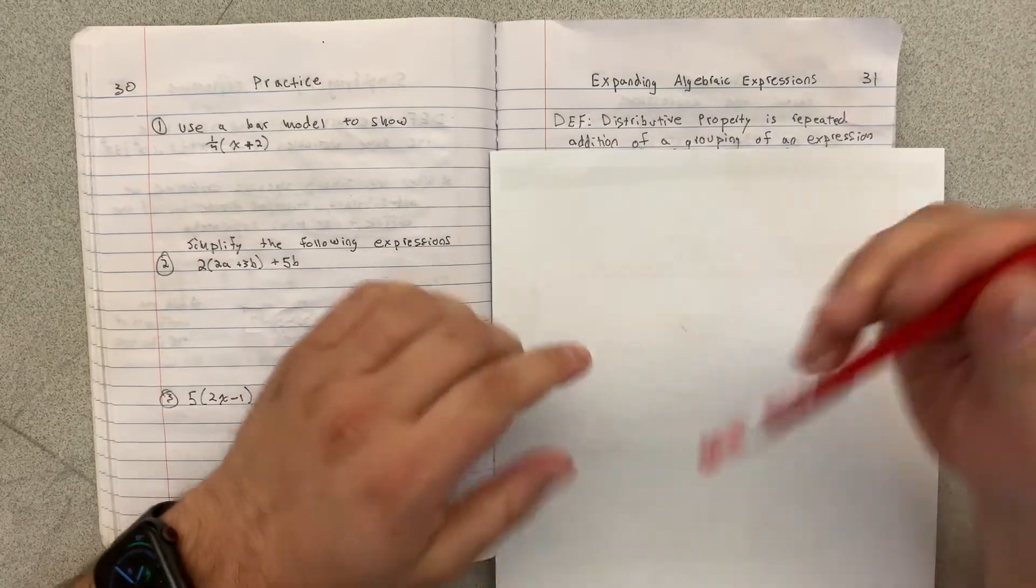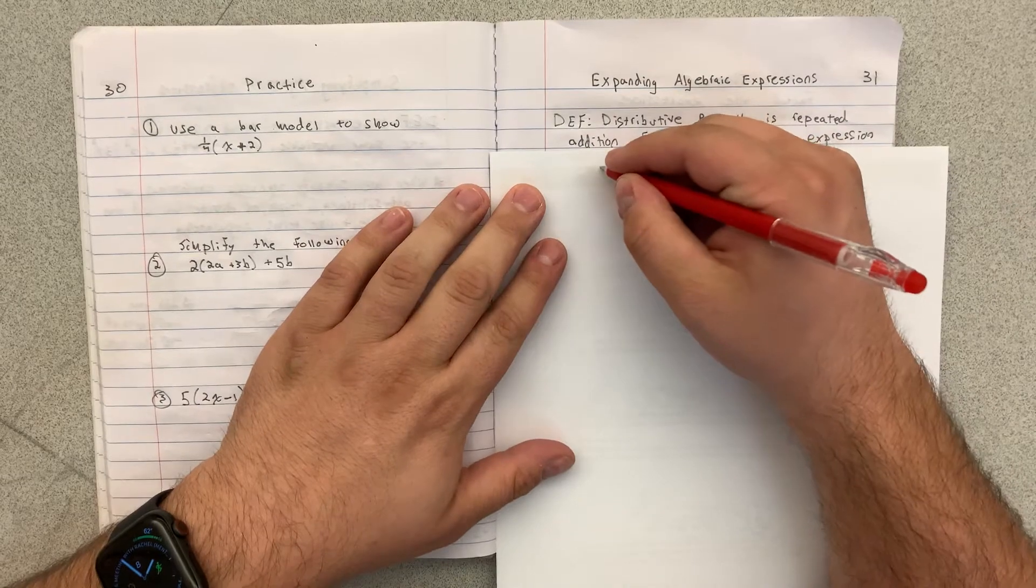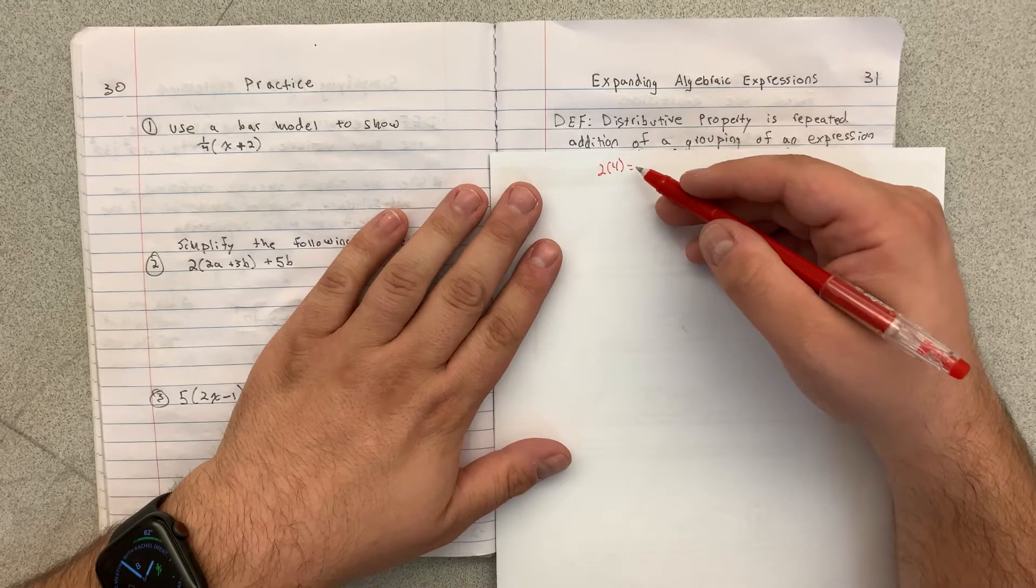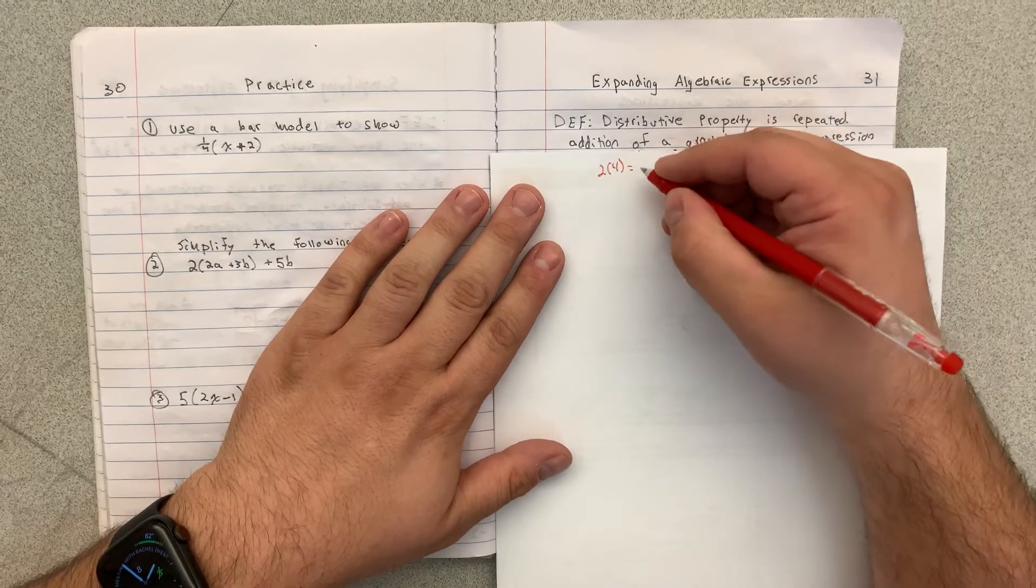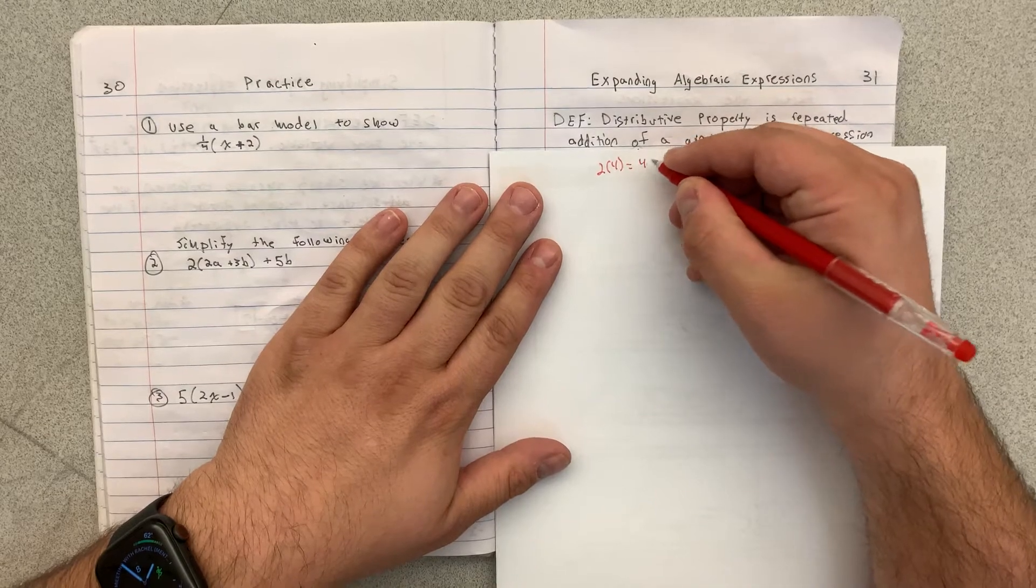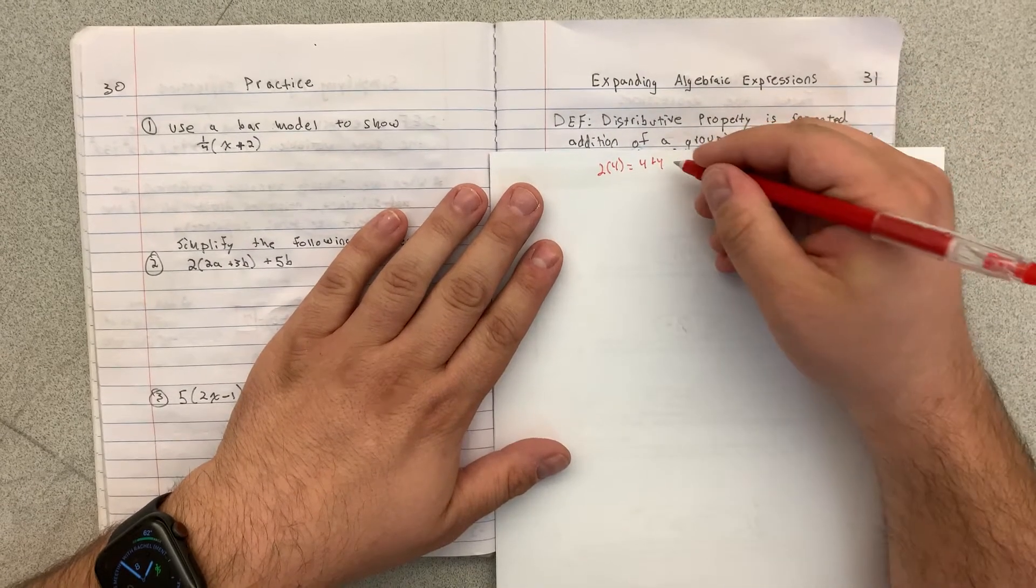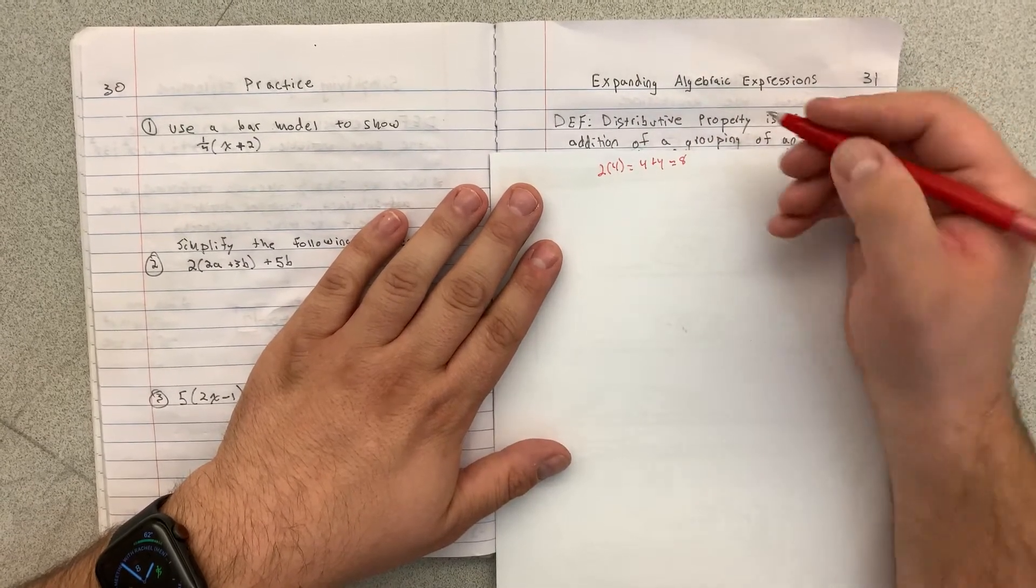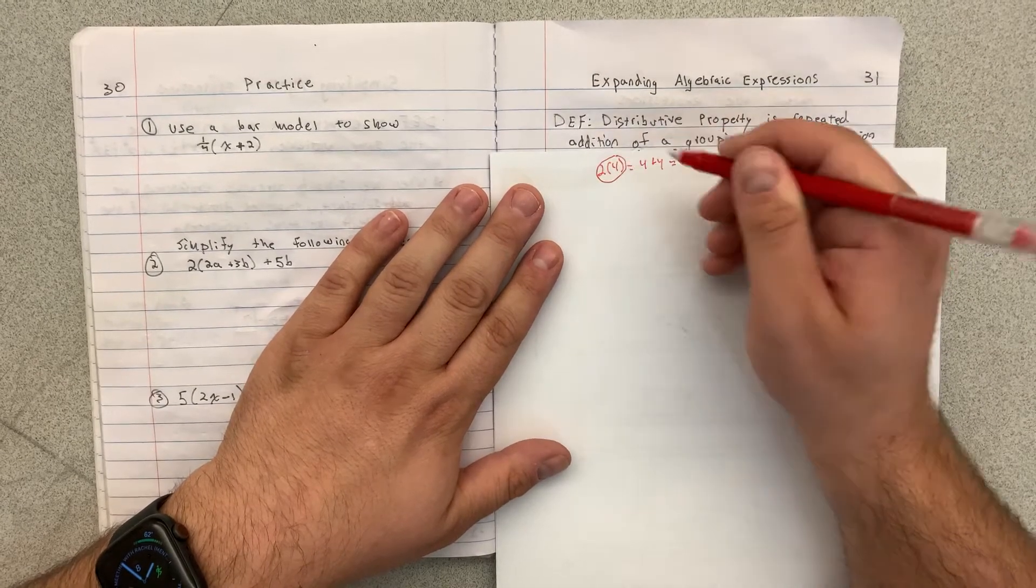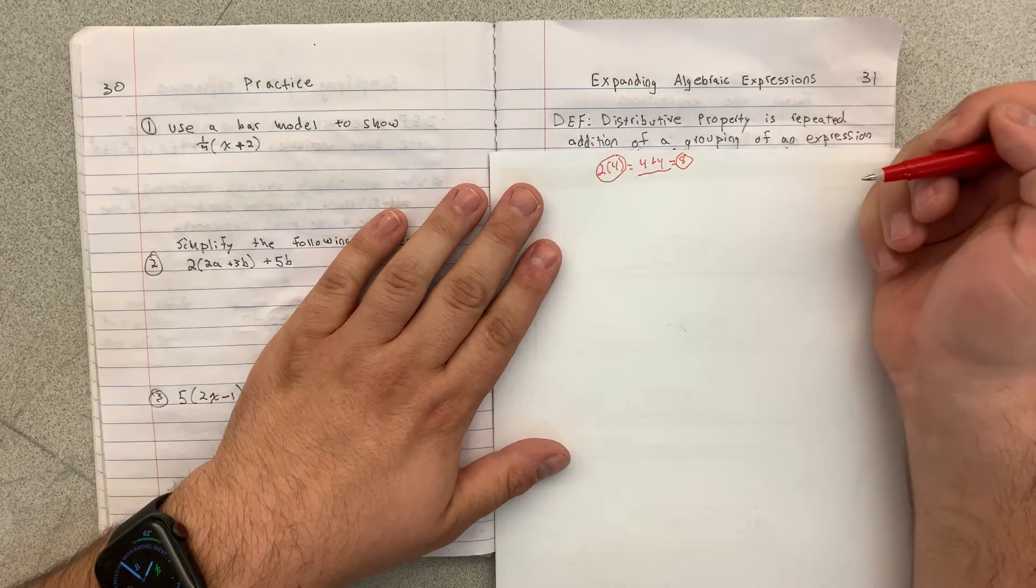For example, let's say that I was multiplying 4 by 2. Multiplication is also called repeated addition. So this really means I'm adding 4 twice, which gives me 8. So when you were younger you were taught to memorize that 2 times 4 is 8 and kind of skip this whole process.